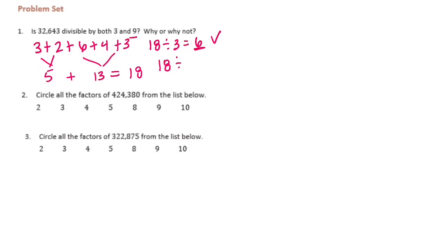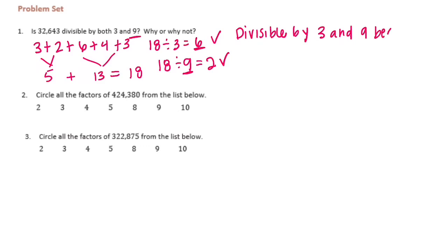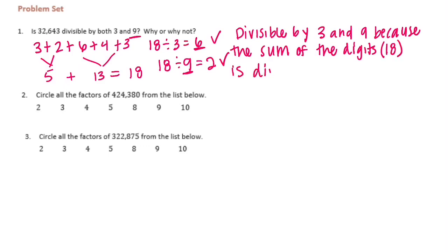18 divided by 9 — it's also divisible by 9 because we get a whole number when we divide by 9. So why or why not? Divisible by 3 and 9 because the sum of the digits, which was 18, is divisible by 3 and 9.